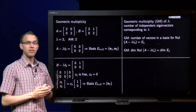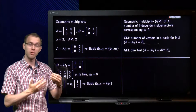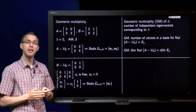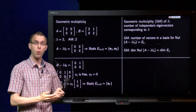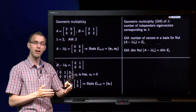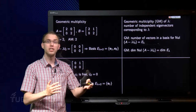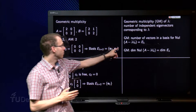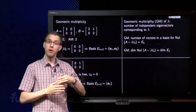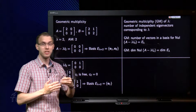We can reformulate this more precisely. The number of independent eigenvectors corresponding to lambda is the same as the number of vectors in the basis for the eigenspace E_lambda, since basis vectors are always independent. So the geometric multiplicity equals the dimension of the eigenspace. Given a lambda, we compute the corresponding eigenvectors and determine the geometric multiplicities.